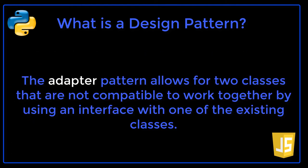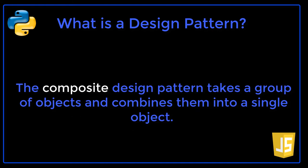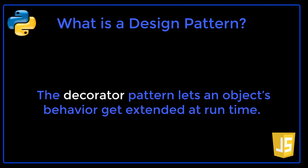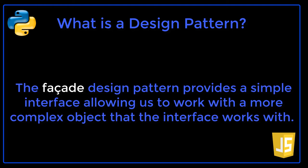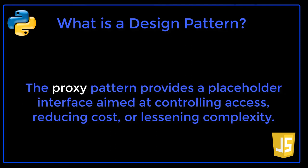The Adapter pattern allows for two classes that are not compatible to work together by using an interface with one of the existing classes. The Bridge pattern decouples two classes so that they can vary independently. The Composite design pattern takes a group of objects and combines them into a single object. The Decorator pattern lets an object's behavior get extended at runtime. The Facade design pattern provides a simple interface allowing us to work with a more complex object. The Flyweight pattern reduces the overhead of creating complex object models. The Proxy pattern provides a placeholder interface aimed at controlling access, reducing cost, or lessening complexity.